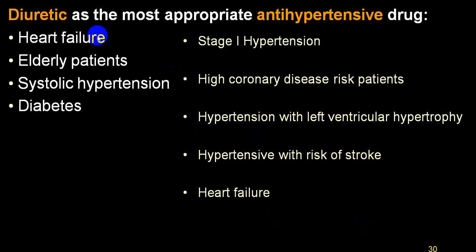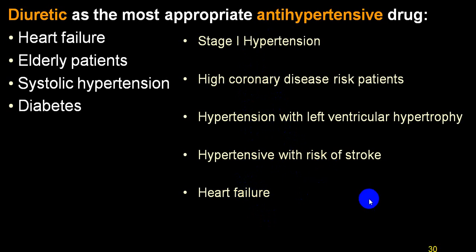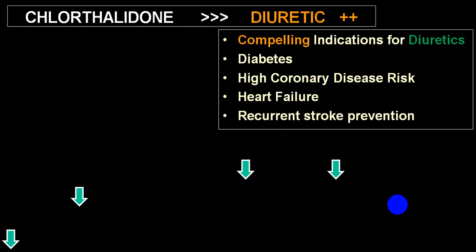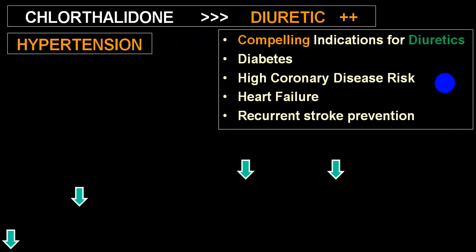Indications for chlorthalidone include: heart failure, elderly patients, isolated systolic hypertension, diabetics with hypertension, stage 1 hypertension, coronary artery disease, LVH, and patients at risk of stroke and heart failure. There are compelling indications for chlorthalidone over thiazide in the presence of diabetes, coronary artery disease, heart failure, and recurrent stroke prevention.